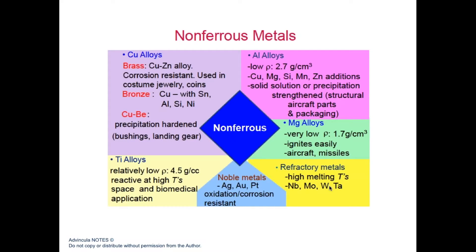Now for non-ferrous metals, where the base metal is not iron: this includes copper, aluminum, titanium, noble metals, and refractory metals. Copper alloys have been around for ages — copper alloyed with zinc is called brass, copper alloyed with tin, aluminum, or silicon is called bronze, and another form is copper beryllium. Aluminum alloys can be alloyed with copper, magnesium, silicon, manganese, and zinc, and are very useful for structures including aircraft parts.